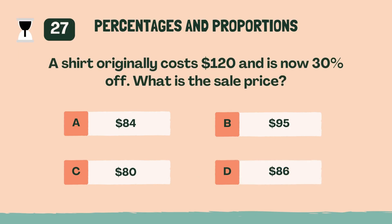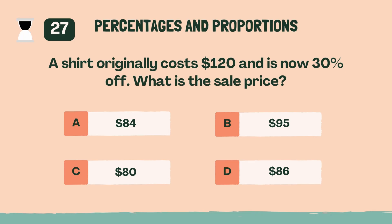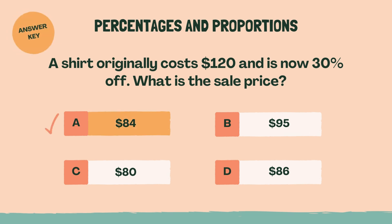A shirt originally costs $120 and is now 30% off. What is the sale price? A, $84.